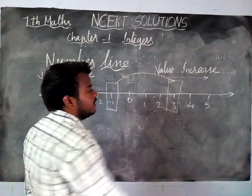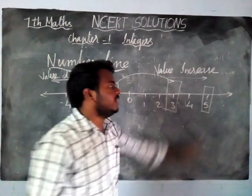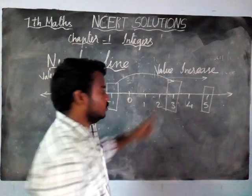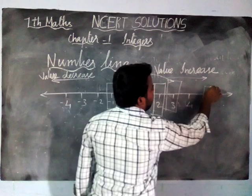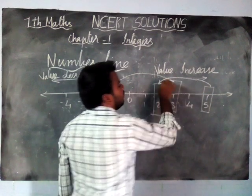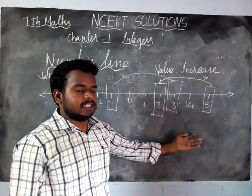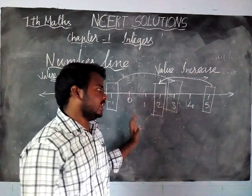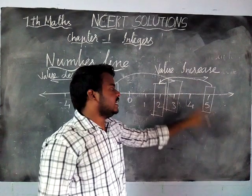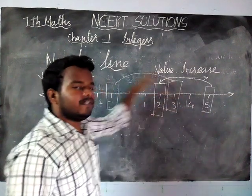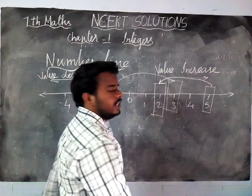In the same way, I am standing on 5. If I am moving left hand side to the number 2, from 5 to 2 I am moving, so my value will automatically get decreased. Any doubt? On the number line, if you are moving right hand side, value will increase. If you are moving left hand side, value will decrease.